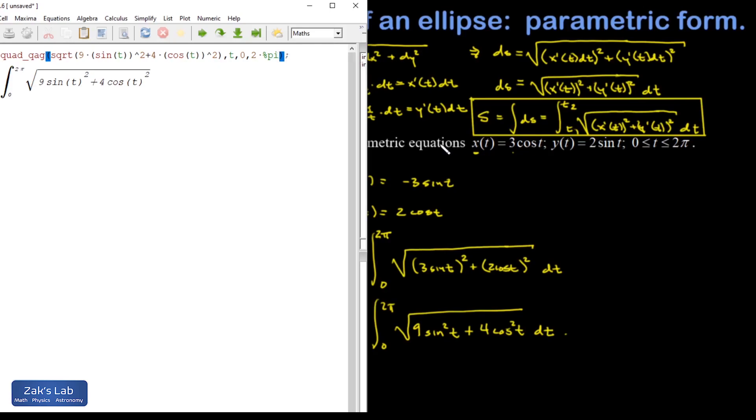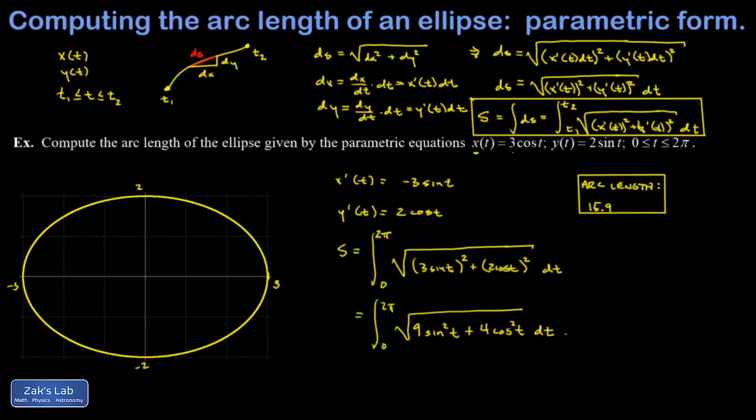And all the syntax is the same for the integral, except that we have to specify which algorithm Maxima is going to use for the approximation. You can choose any number from 1 to 6. So I just chose a 1. And the first number that pops out of this is the approximate value of the integral. So about 15.9. So there's the arc length of our ellipse.